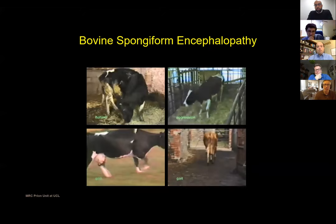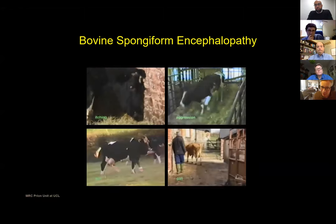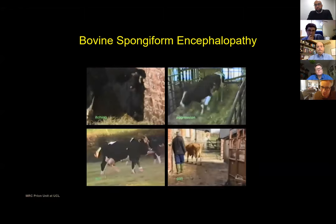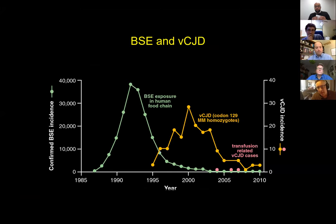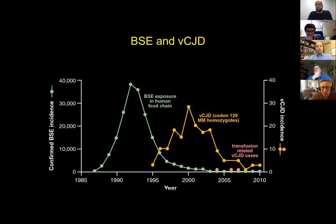Tragically, it caused variant CJD. In the field, this is not really contested now — it's the same prion strain. To date, it's killed about 230 predominantly young people of variant CJD and subsequently spread human to human through blood transfusion. Three cases have occurred where people received blood donated by those incubating or in the very early stages of variant CJD disease.